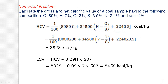Let me do one numerical problem using Dulong's formula. Calculate the gross and net calorific value of a coal sample with the following composition: Carbon 80%, Hydrogen 7%, Oxygen 3%, Sulfur 3.5%, Nitrogen 2.1%, and Ash 4%. Here, carbon, hydrogen, oxygen, and sulfur are present in the formula. Nitrogen and ash are not mentioned in the formula as they are non-combustible substances — they don't contribute any calorific value, so we need not calculate calorific value for them.